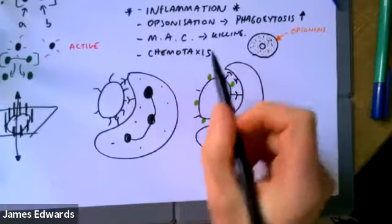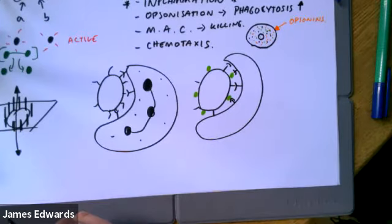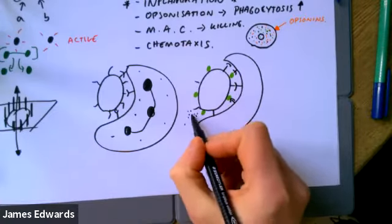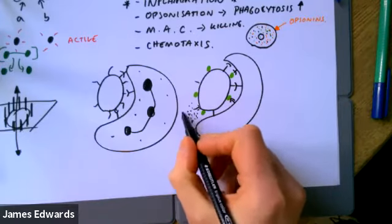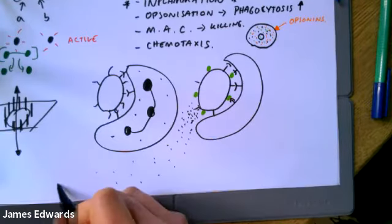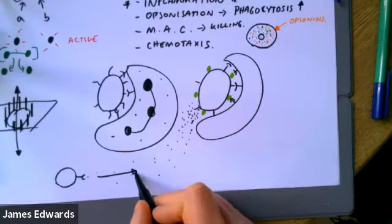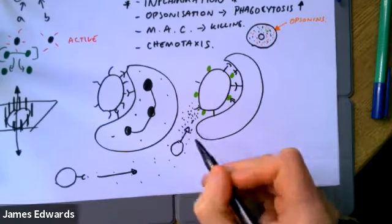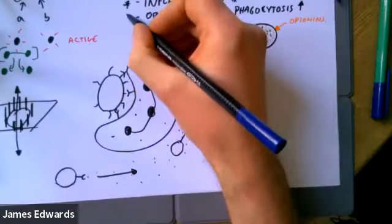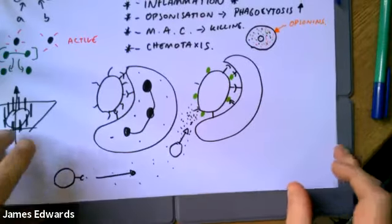Chemotaxis: some of the proteins form a concentration gradient from the bacterial cell outward, becoming fewer and fewer. Cells detect the presence of these molecules and move up the concentration gradient until they reach the bacteria. It's quite an efficient way of attracting white blood cells to the bacteria.